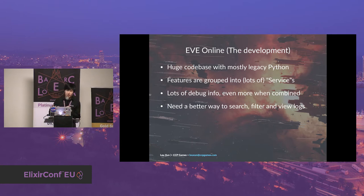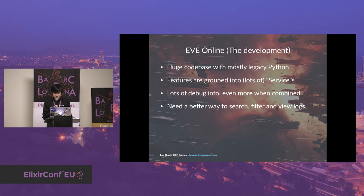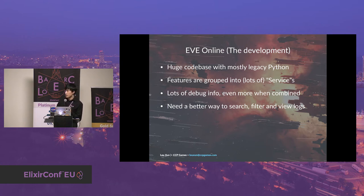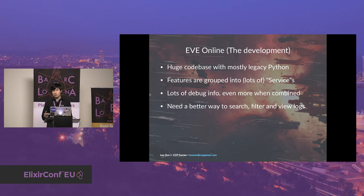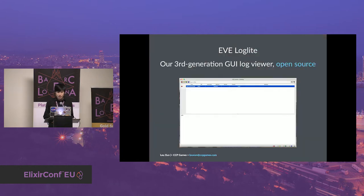Today I'll be talking about the development of EVE Online. It has a very huge codebase and we write it mostly in very legacy Python — when we started, there wasn't even Python 1.0. We have our own import mechanism and all sorts of crazy stuff. We group game features into services, kind of microservice style, although they are not very micro. A lot of events happen during the game, so we need a better way to search, filter, and read all the logs generated from all the services. That's why we came up with EVE LogLite.